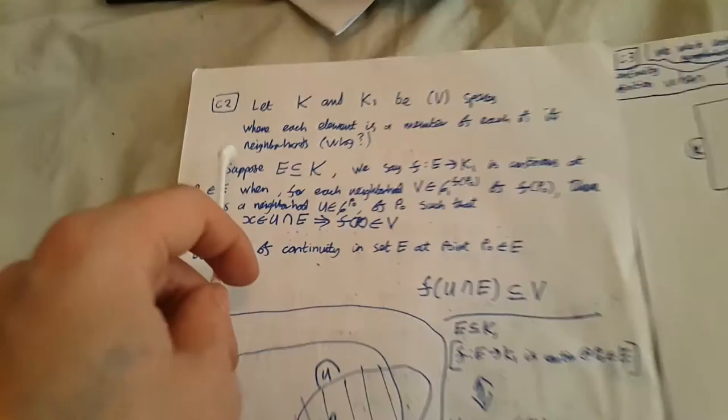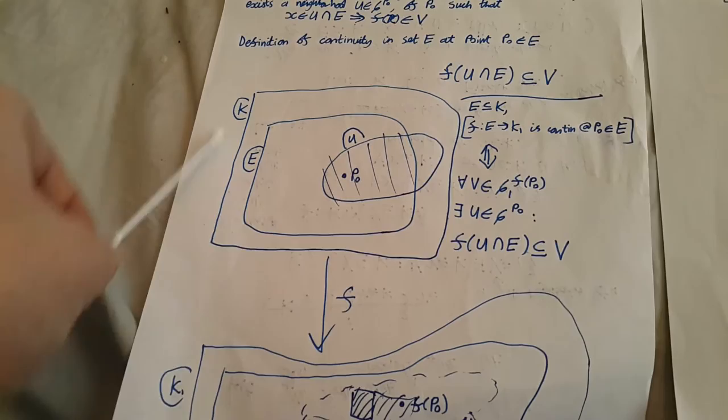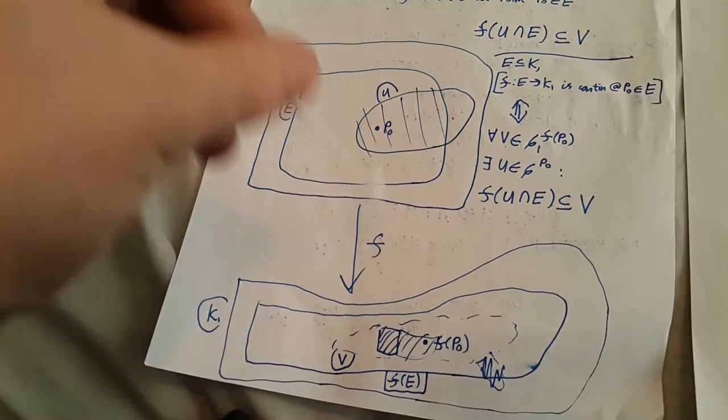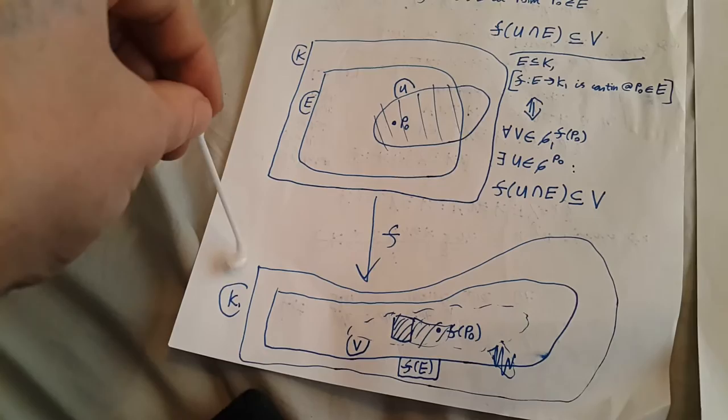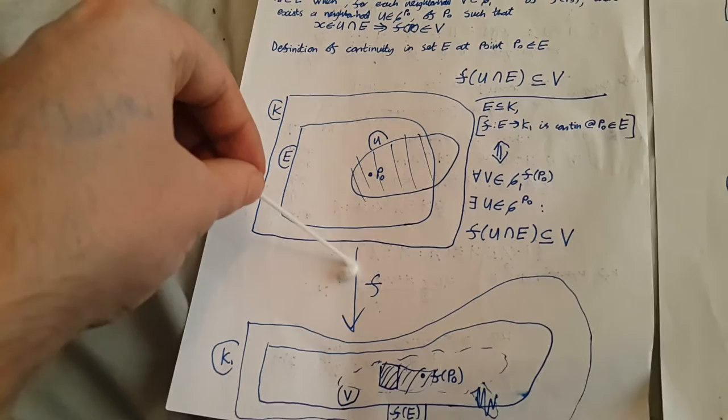So we're going to define what it means for a subset E of one Fréchet V-space K to have a continuous mapping from this set into some other Fréchet V-space K1 — it could be the same set but with different structure. It's a mapping F, and it's going to be mapping points from E into points in K1. So every element x in E is going to get associated with an element F(x) in K1. E is going to be a subset of K, and there's going to be a certain subset of K1, here drawn as F(E), which is where all of the points from E get mapped to.